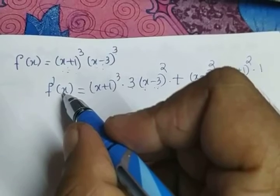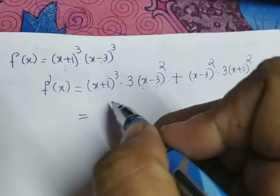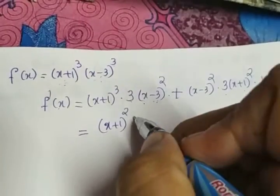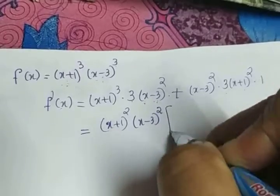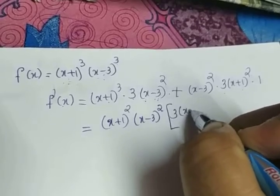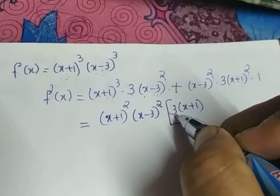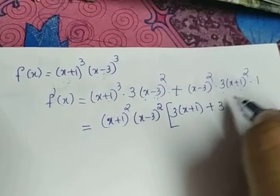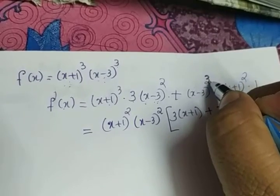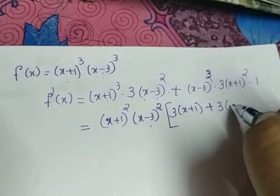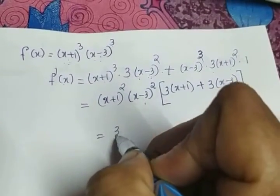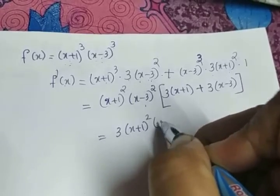We take common factors out, since the next step is to equate f'(x) to 0 and find x. What is common? (x+1)² is common and (x-3)² is common. So (x-3)² and (x+1)² come out. The balance in the first term is 3·(x+1), and from the second term, since (x-3)³ had (x-3)² taken out, we are left with (x-3).